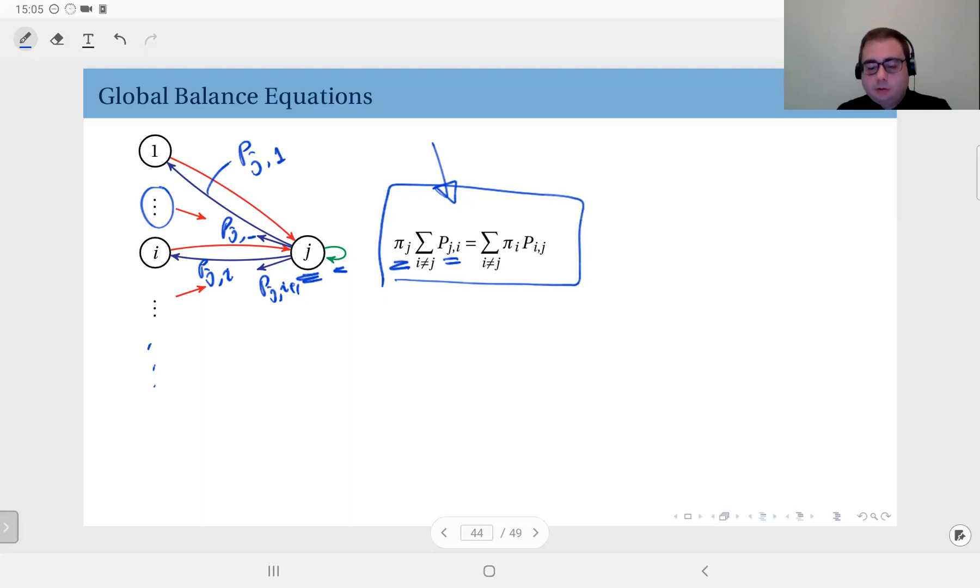And that equals the flux, the probability flux in. Those are the red ones. This is p₁ⱼ, this one has probability pⱼ.